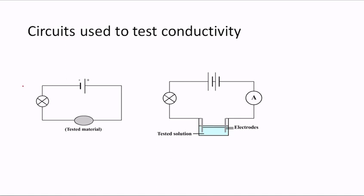This is a simple circuit that can be used to test the conductivity of a material. In this first circuit we have a cell and a bulb, and this is where we put the material we want to test. So if we wanted to see if graphite is a conductor, we take a piece of graphite and put it in the circuit, and if it conducts electricity the bulb will light.